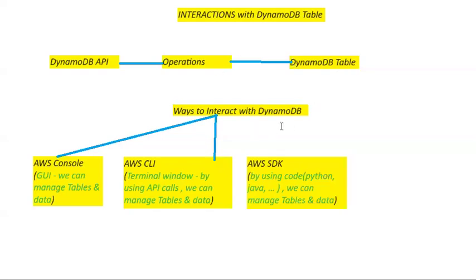We can also interact with DynamoDB using code — either Python, Java, .NET, PHP, Ruby, Go, or C++. By using such major programming languages, you can write code and interact with DynamoDB programmatically using the AWS SDK. SDK stands for Software Development Kit, and it provides support for all these languages.